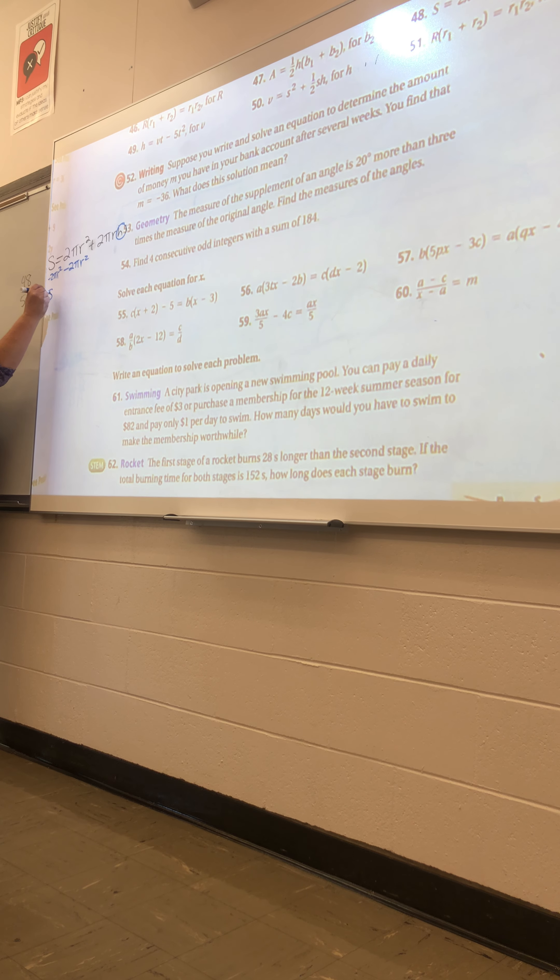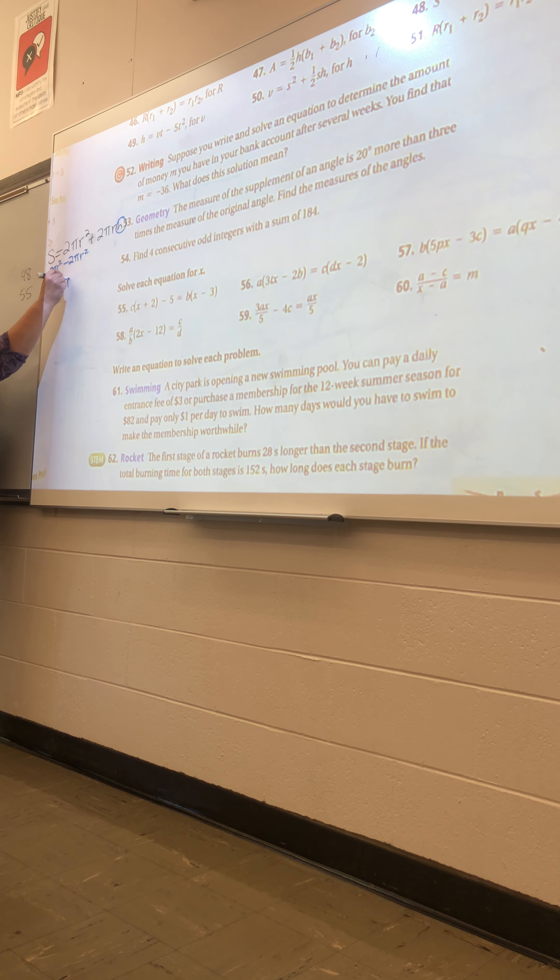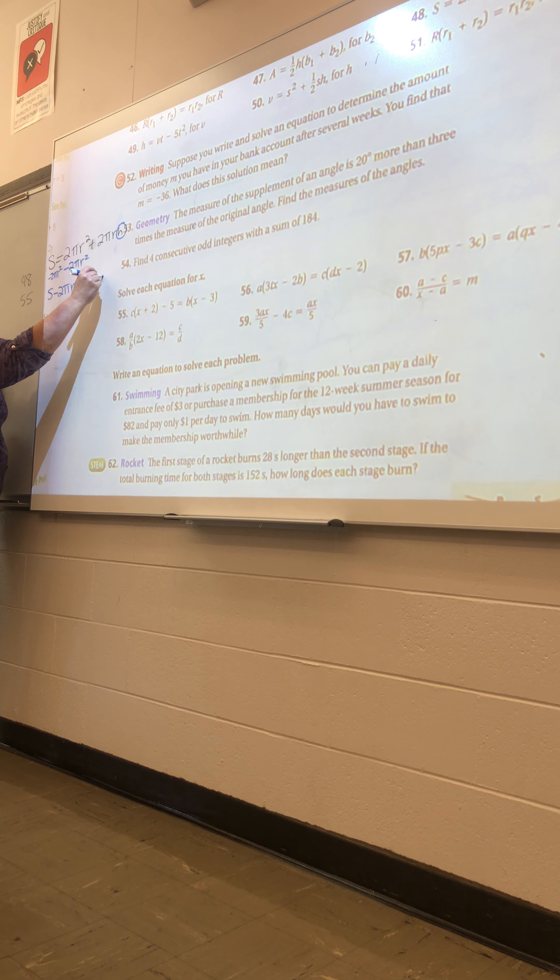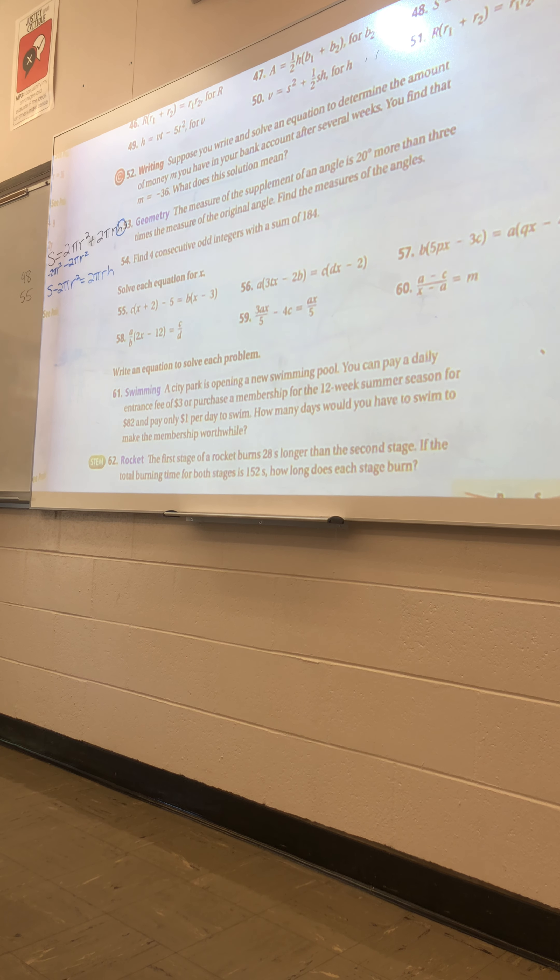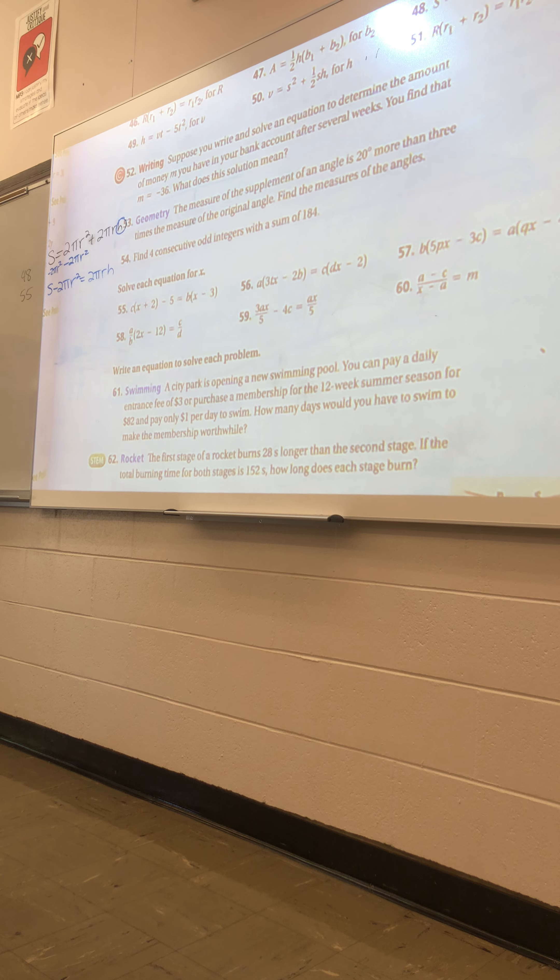So you're going to have s minus 2 pi r squared equals 2 pi r h. And now you only have 2 pi r and h, they're all multiplied together.